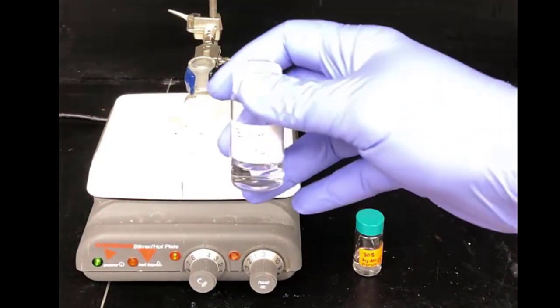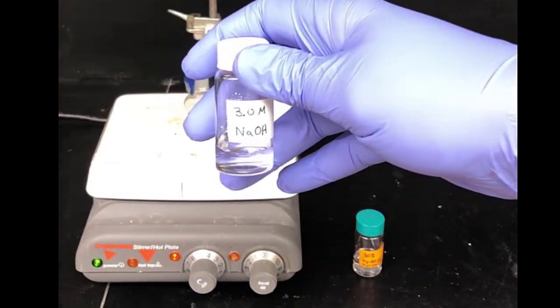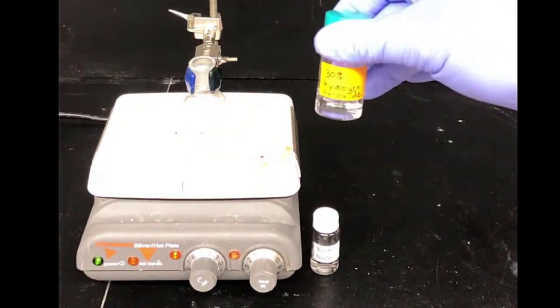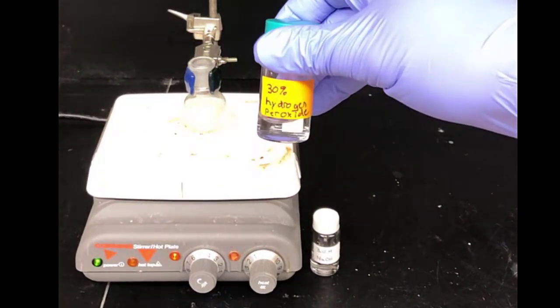In this experiment, we'll be using two reagents. The first one is three molar NaOH, sodium hydroxide, and the second one is 30% aqueous hydrogen peroxide.